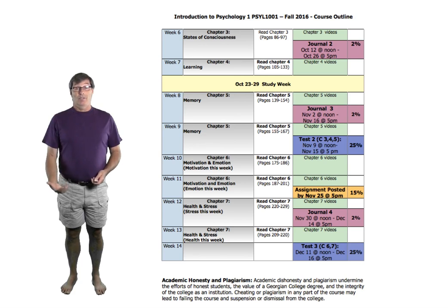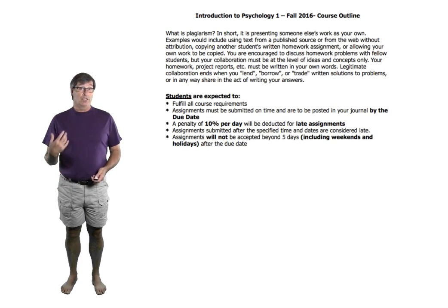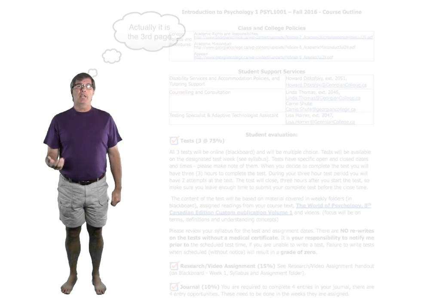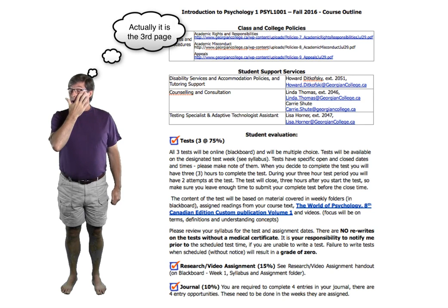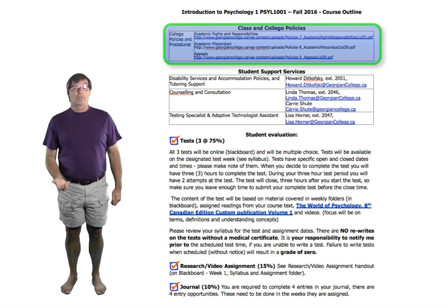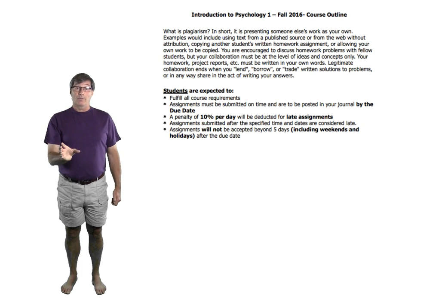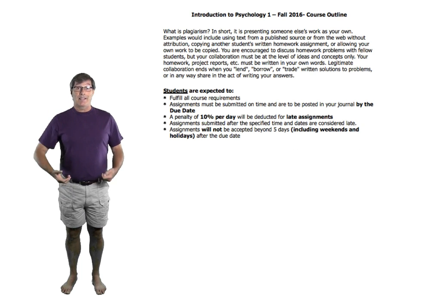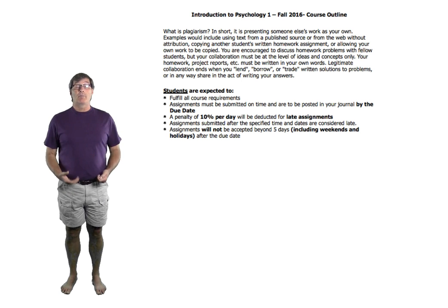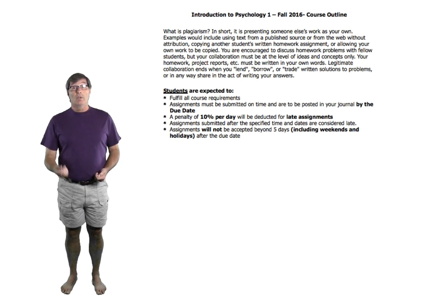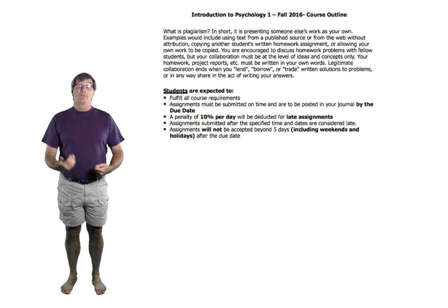The last thing on your syllabus, which is equally important, is on the second or third page — there's a section on academic policies and procedures with links. I'm going to ask you to be aware of the issue of plagiarism. It's a serious offense in post-secondary education. That section gives you a simple overview, and the links will tell you what plagiarism is, what the penalties are, and what the appeal process is.